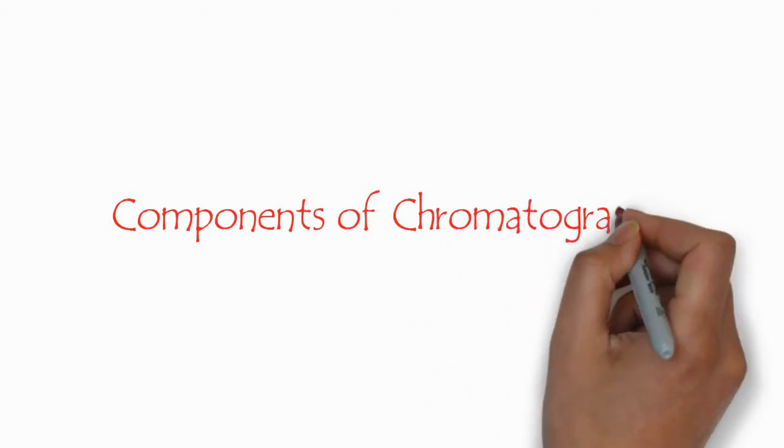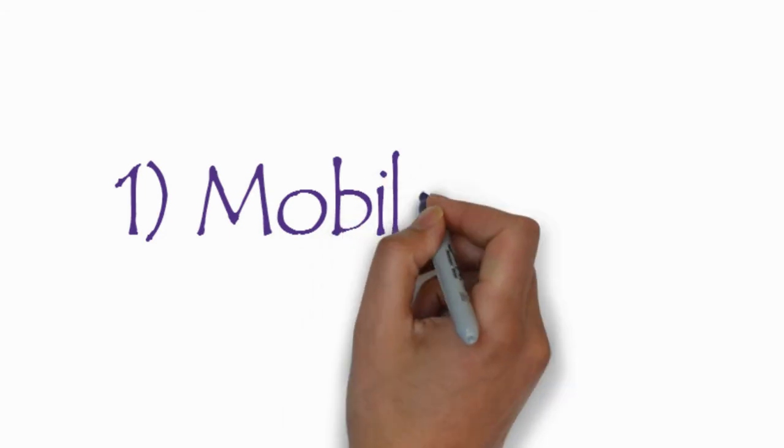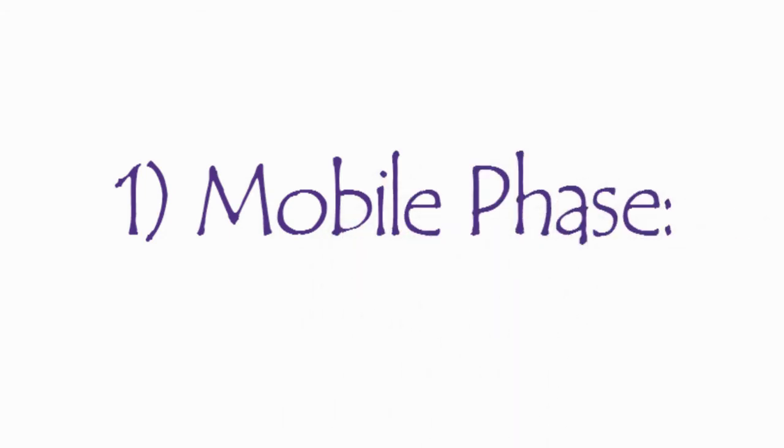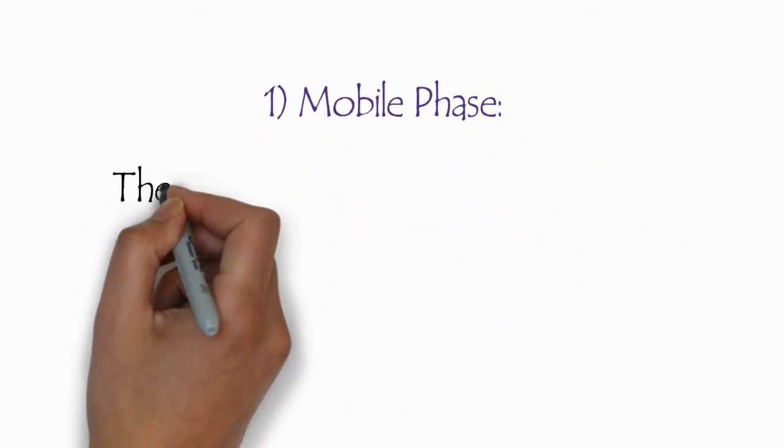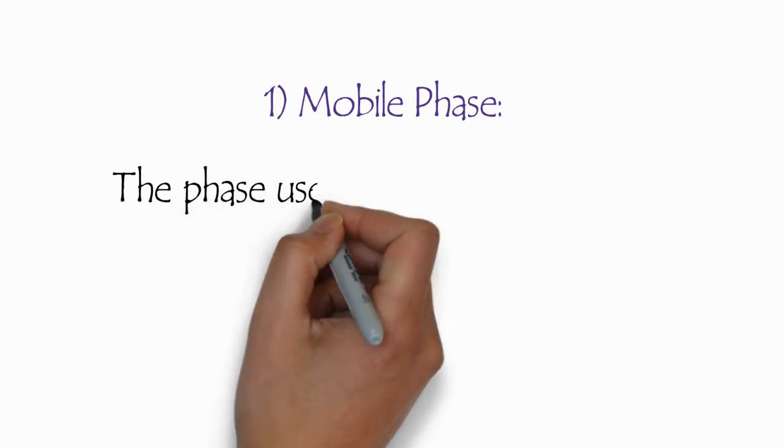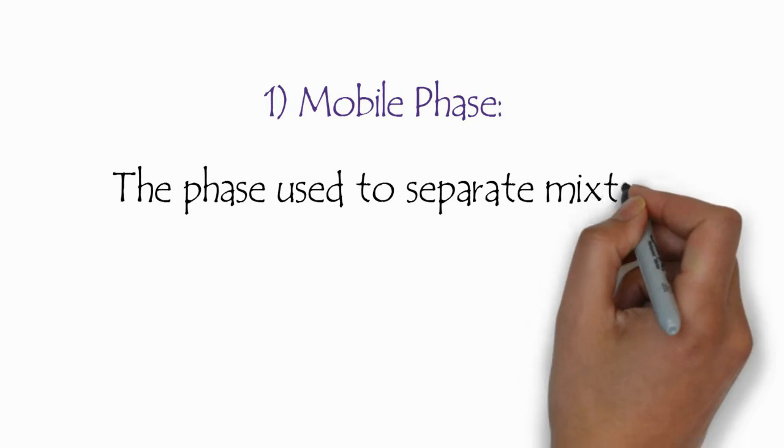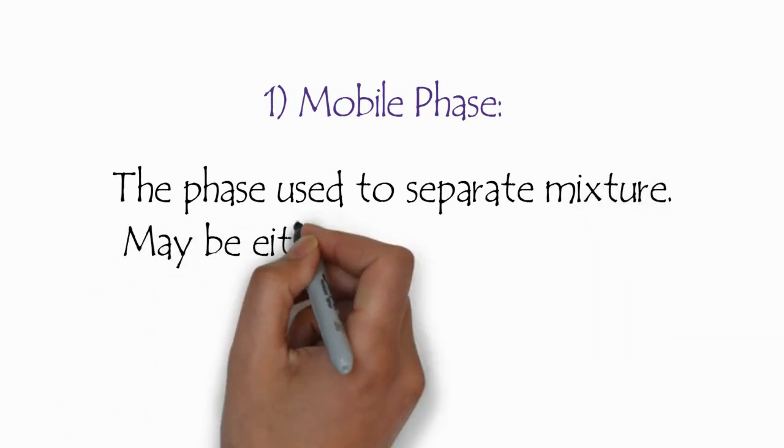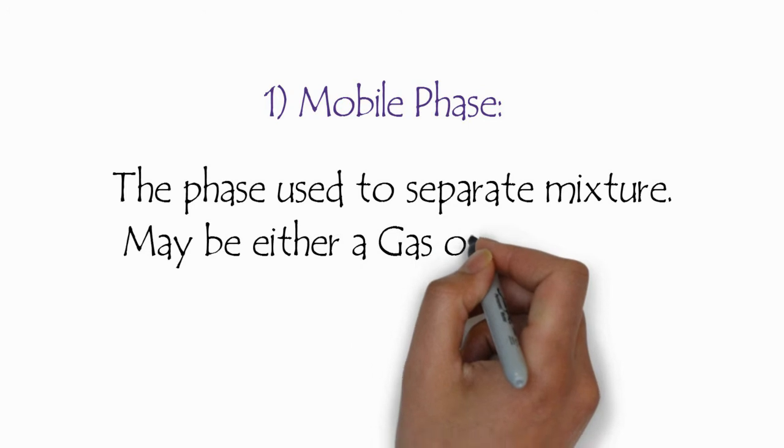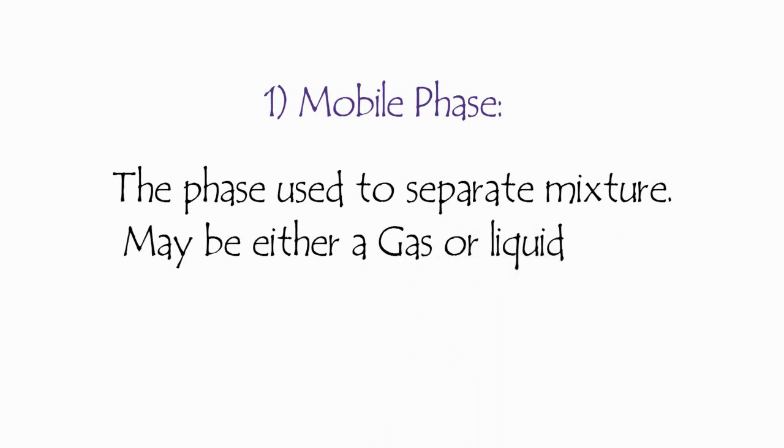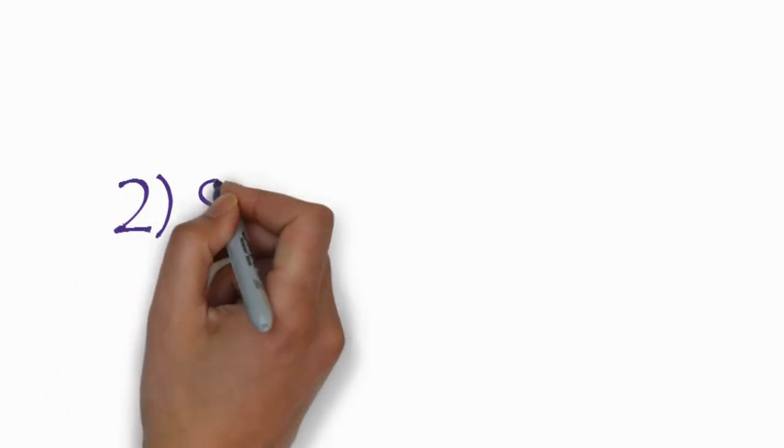What are the components of chromatography? As mentioned in the definition, there are two main components. The first one is mobile phase. This phase is used to separate the mixture. It may be either a gas or a liquid phase.